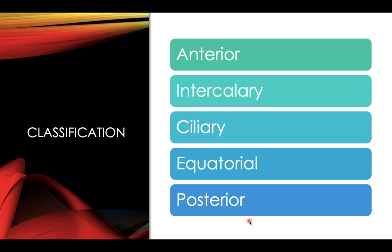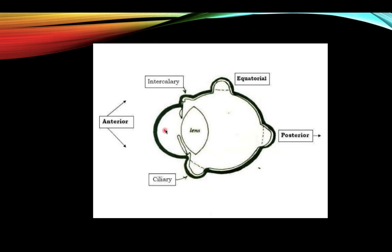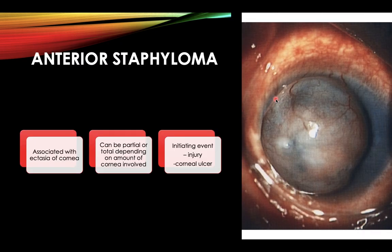There are five types depending on position: anterior, intercalary, ciliary, equatorial, and posterior staphyloma. Anything involving the cornea only is anterior; the limbus and two millimeters from it is intercalary; ciliary is eight millimeters from the limbus; equatorial is fourteen millimeters from the limbus; and posterior involves the posterior pole.